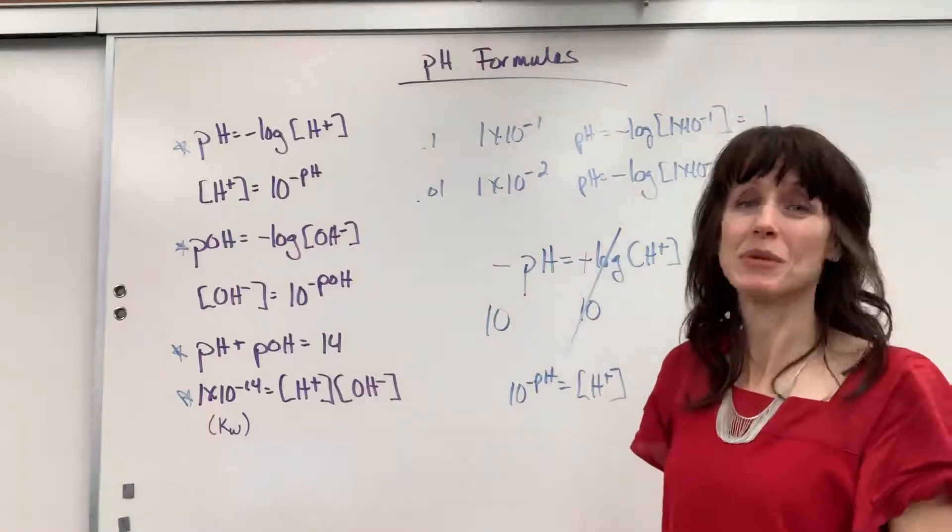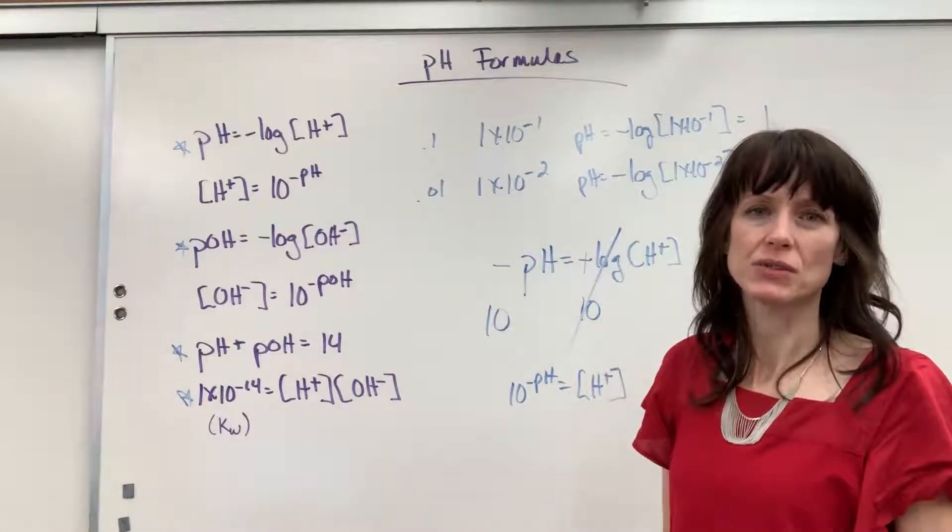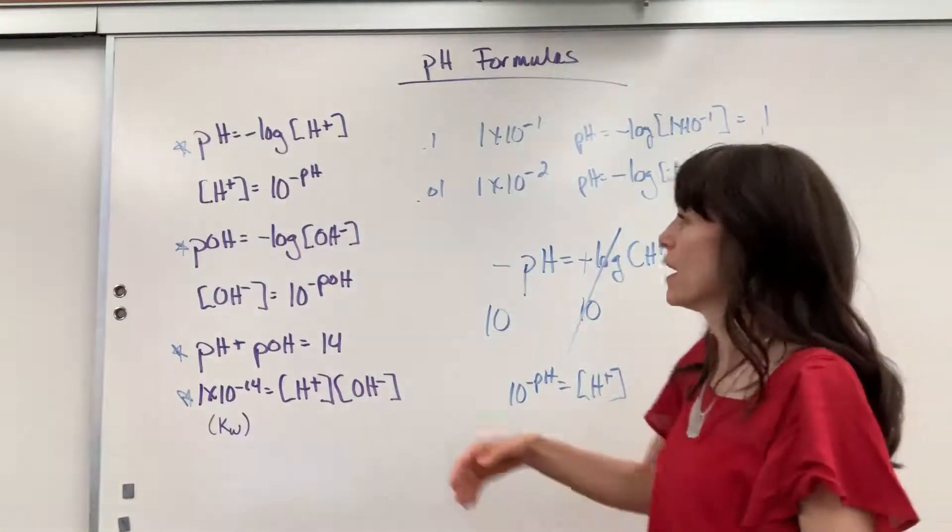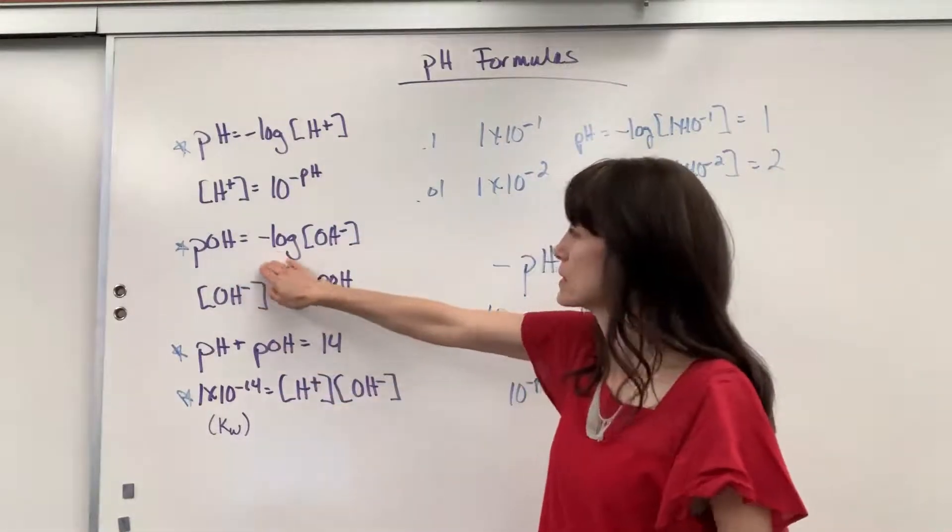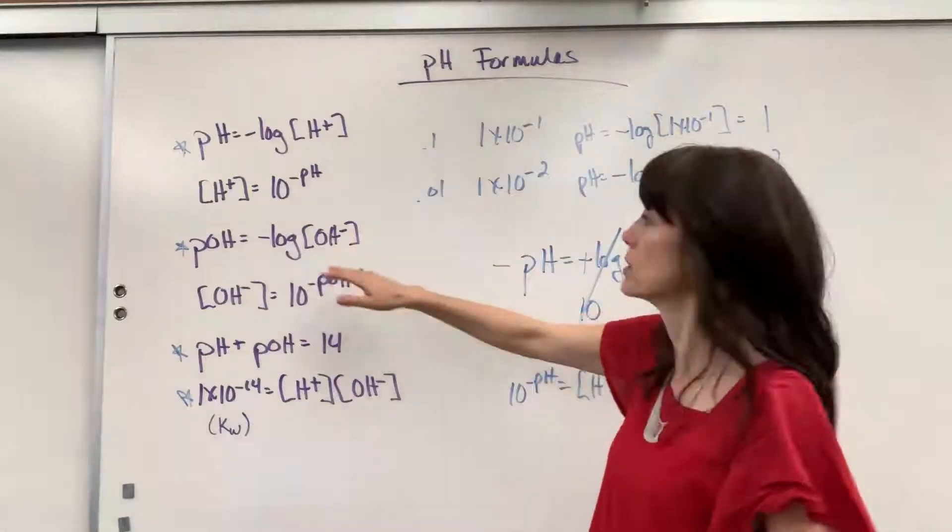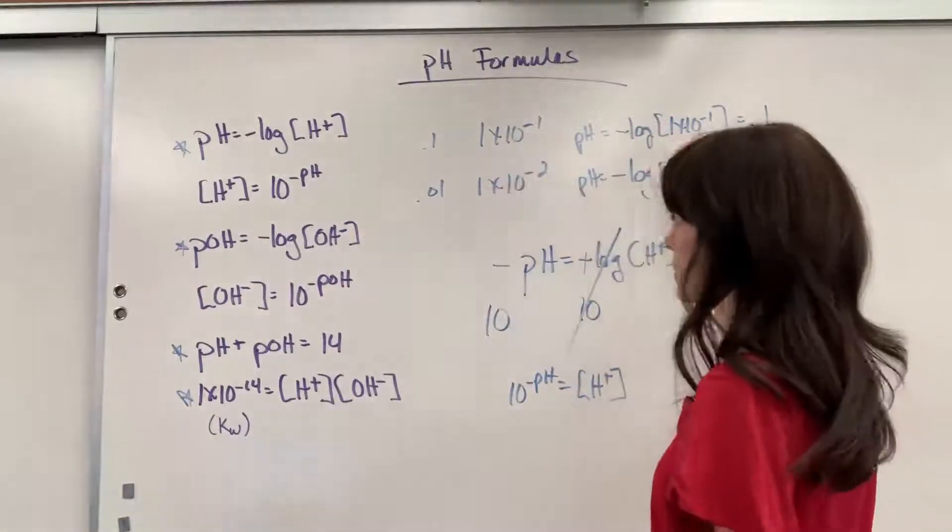Okay. Now, related to this is going to be POH. So, POH is going to give us the relationship of per hydroxide, the concentration of hydroxide. So, POH equals the negative log of the hydroxide concentration. Same, same principle.